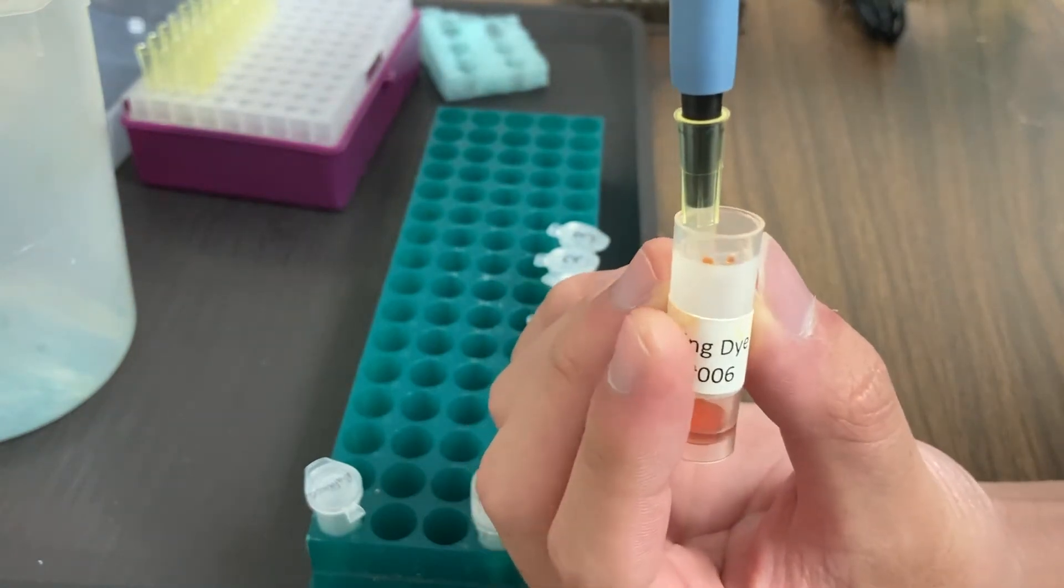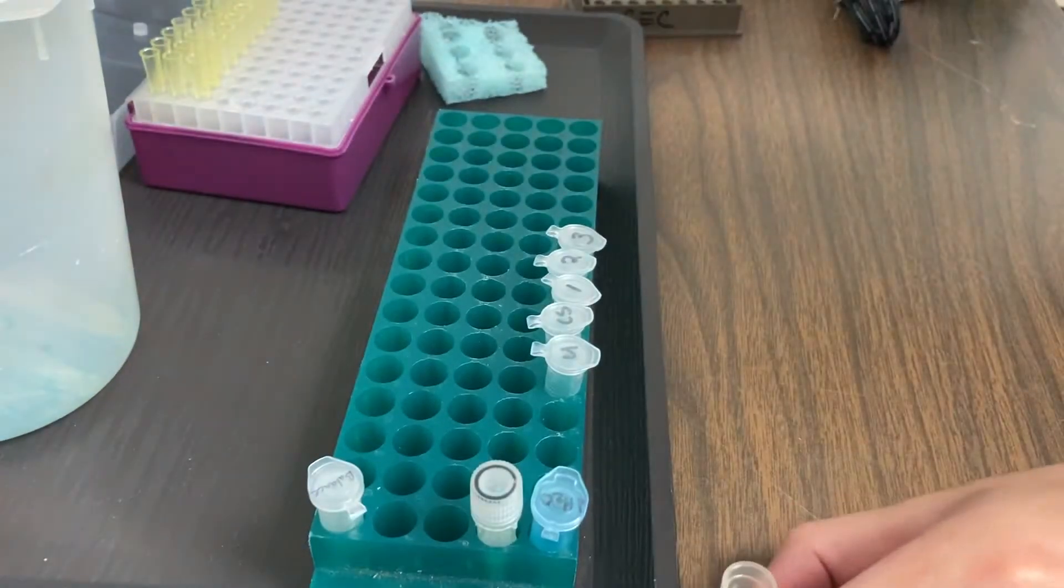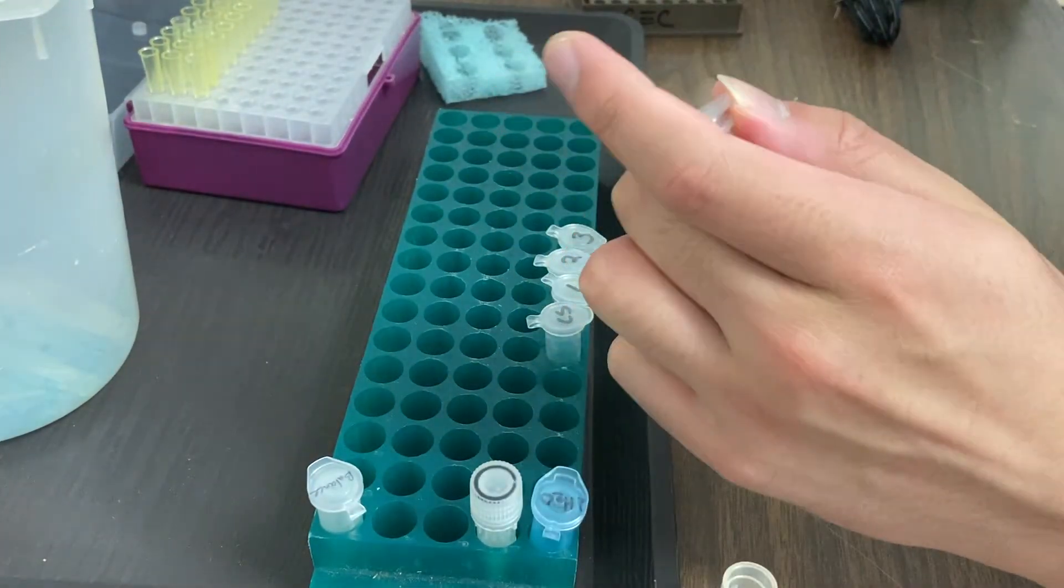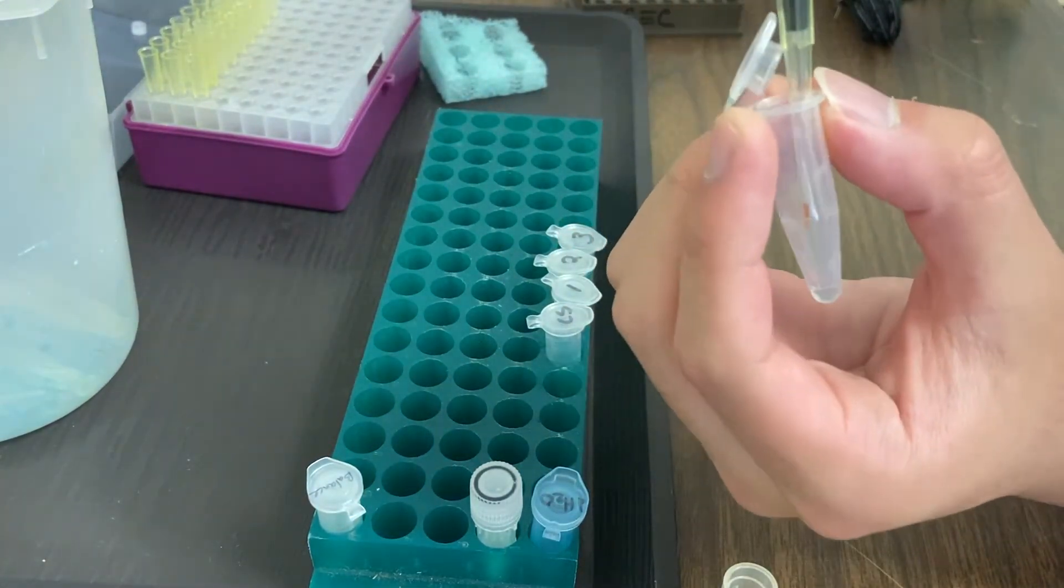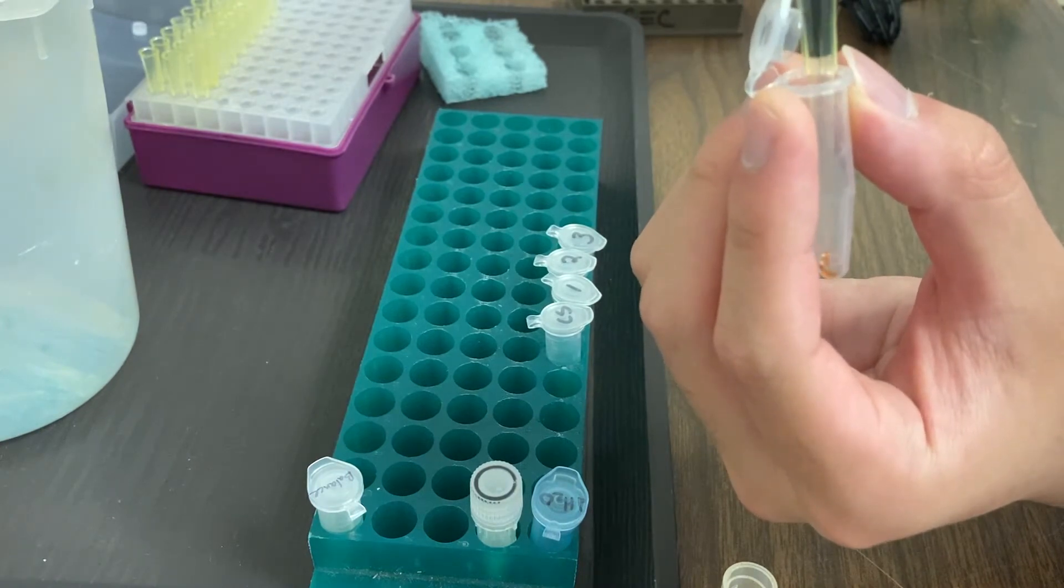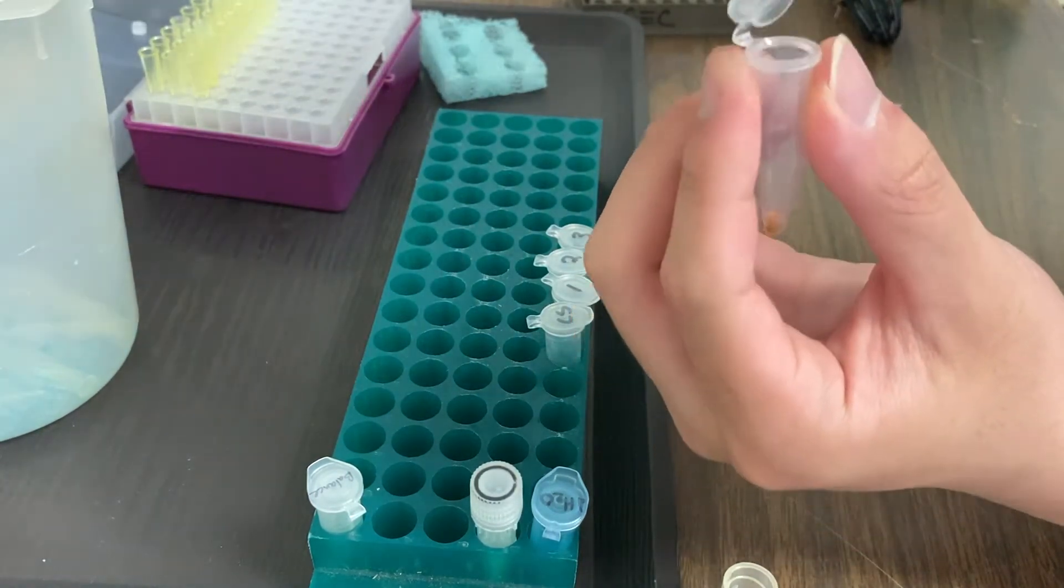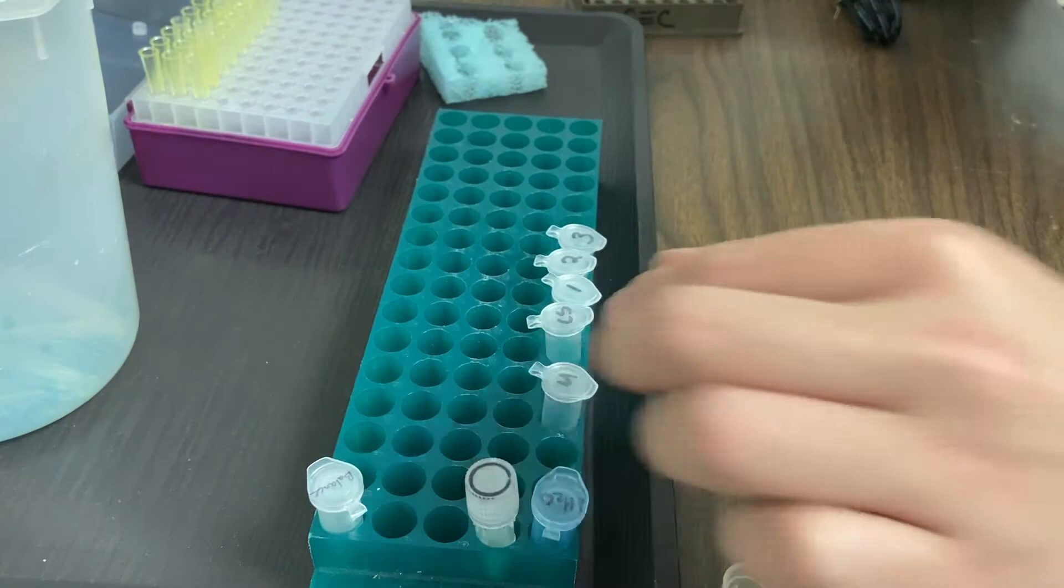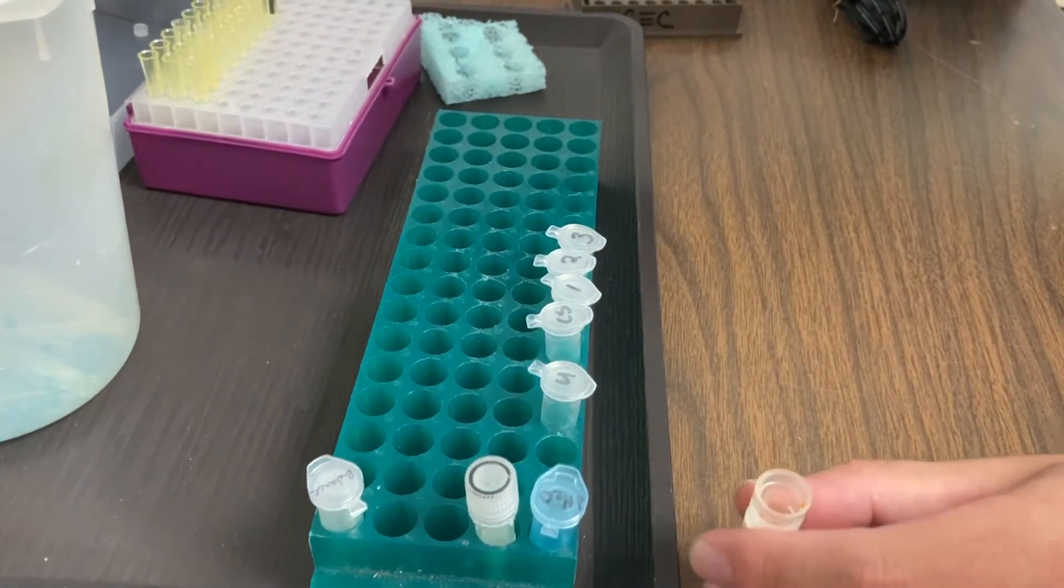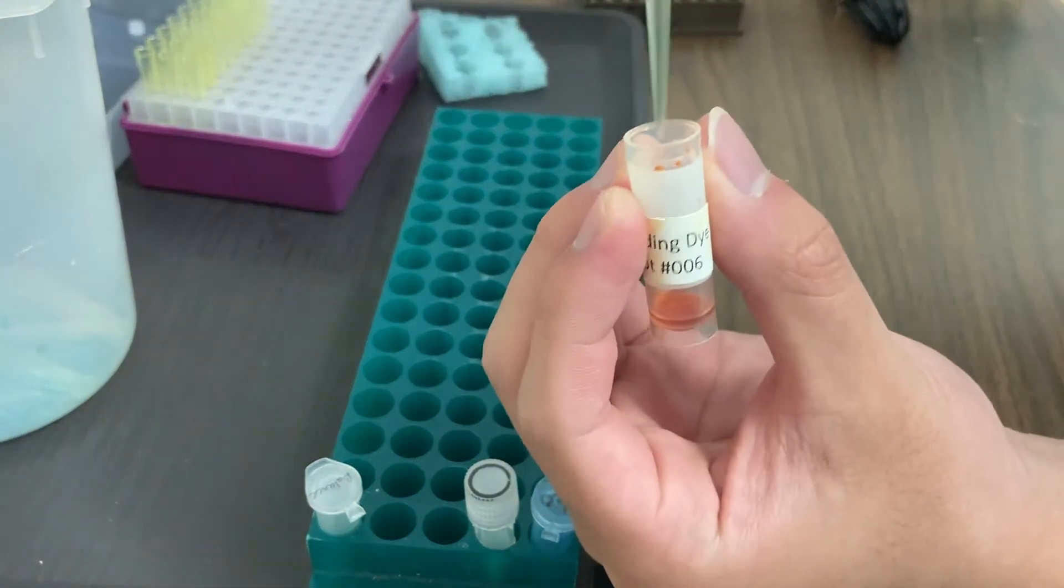If you remember, I said we're doing two microliters, which is actually a really small amount. So we're going to put the loading dye all the way to the bottom of the tube to make sure that it mixes with our restriction digest. Now make sure that we switch our tips because we don't want to mix up our sample's DNA.